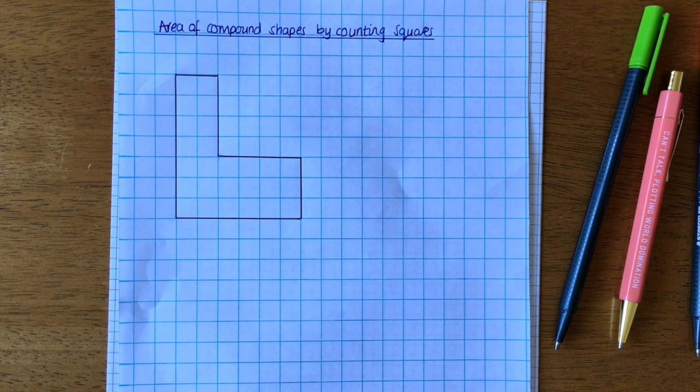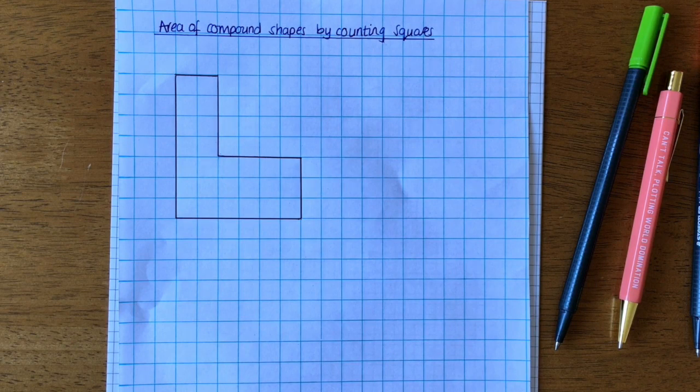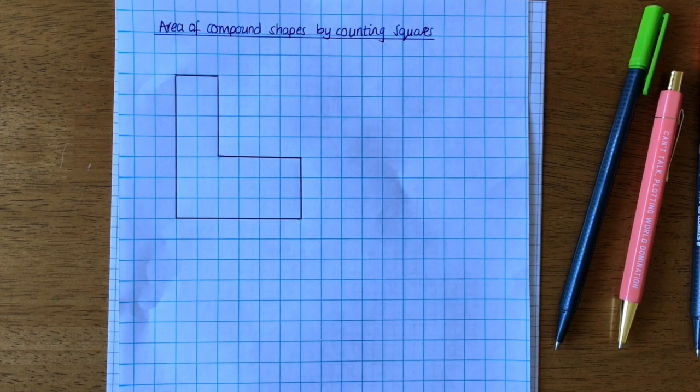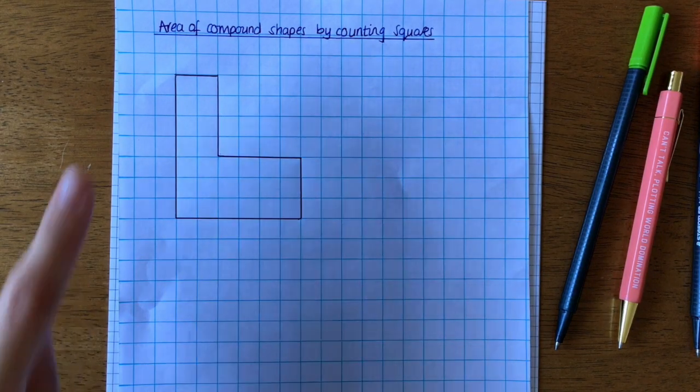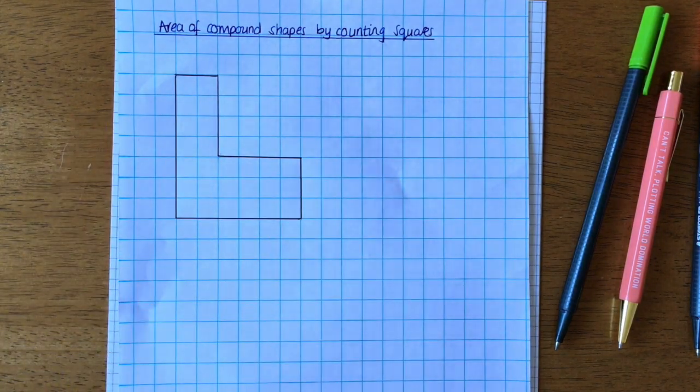Now we have done a little bit of this where we were counting the squares on the different shapes when we were working at the area, but we're going to look at this particular type of shape in more detail.